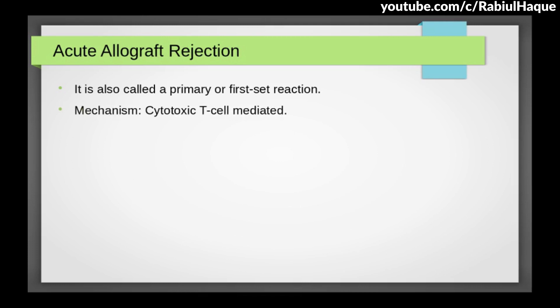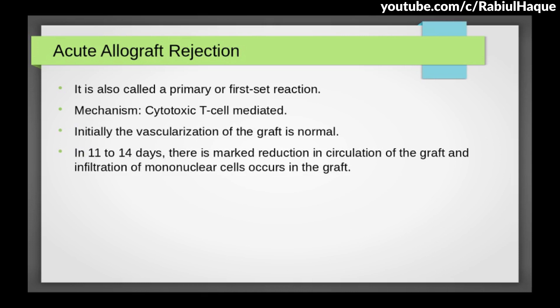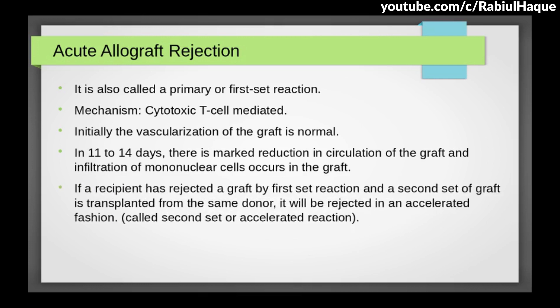Initially, the vascularization of the graft is normal. However, in 11 to 14 days there will be marked reduction in circulation of the graft and infiltration of mononuclear cells — that means lymphocytes — into the graft. If a recipient has rejected a graft by first set reaction and a second graft is transplanted from the same donor, it will be rejected in an accelerated fashion. This is called the second set or accelerated reaction.